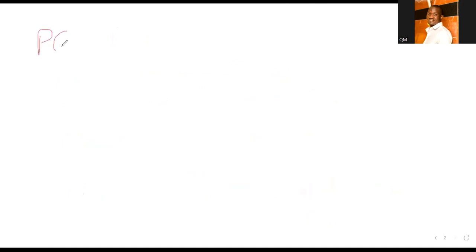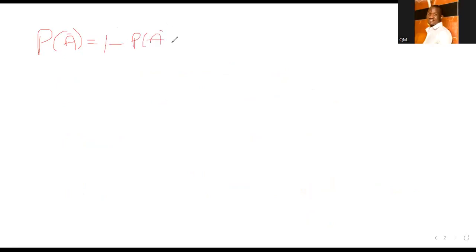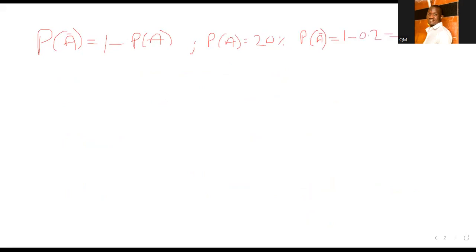Quick recap: the complement of A is one minus the probability of A. So if A is 20 percent, what is the complement of A? It is one minus 0.20, which is 0.80. That is correct.